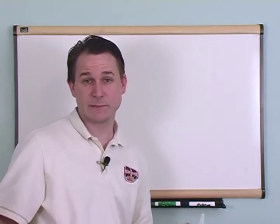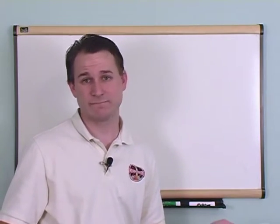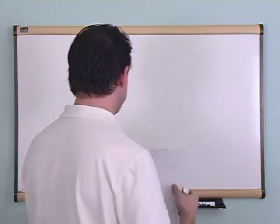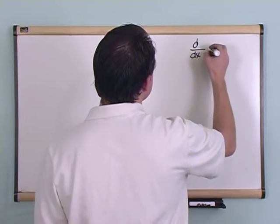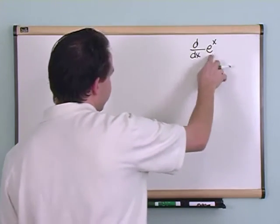It turns out that the exponential function is actually quite easy. It's very simple to remember what the derivative of the exponential function is. The derivative with respect to x of e to the x, remember e is just a number, 2.7 something, raised to the x power, this is called the exponential function.